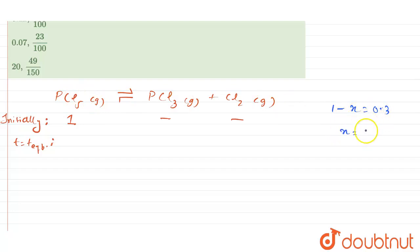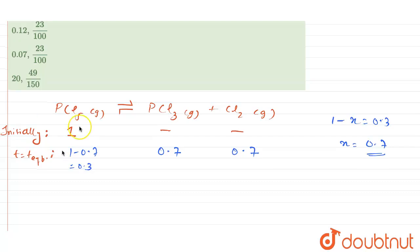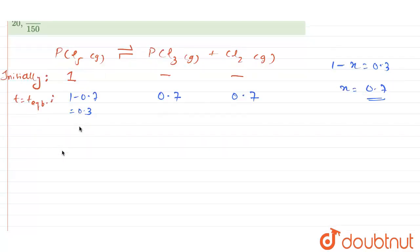Here you will have 1 minus 0.7, which will give you the concentration as 0.3 at t equilibrium. And here you will have PCl3 as 0.7 and Cl2 as 0.7. This is your 0.3 as your number of moles for PCl5.